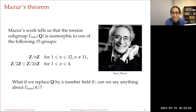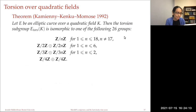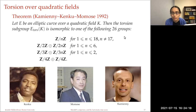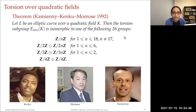Mazur's work gives a classification: the rational torsion subgroup of an elliptic curve over Q is isomorphic to one of 15 groups — Z/nZ for n between 1 and 12 (excluding 11), or Z/2Z × Z/2nZ for n between 1 and 4. One can also ask: what if we replace the rational numbers by a number field? Going up by degree 1 to quadratic fields, Kamienny, Kenku, and Momose — in work spanning about a decade and at least 15 papers, culminating in 1992 — showed that the torsion subgroup of an elliptic curve over a quadratic field is isomorphic to one of 26 groups.